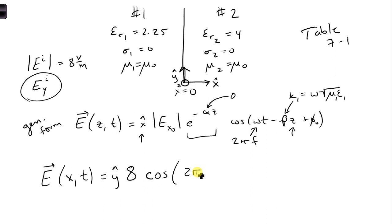And we're going to go straight to the cosine 2 pi. And we'll put in the frequency, which we didn't write down the frequency. So one more thing that's given in the problem is that f is 3 gigahertz. So 2 pi times 3 times 10 to the 9th t minus k1, or beta 1.